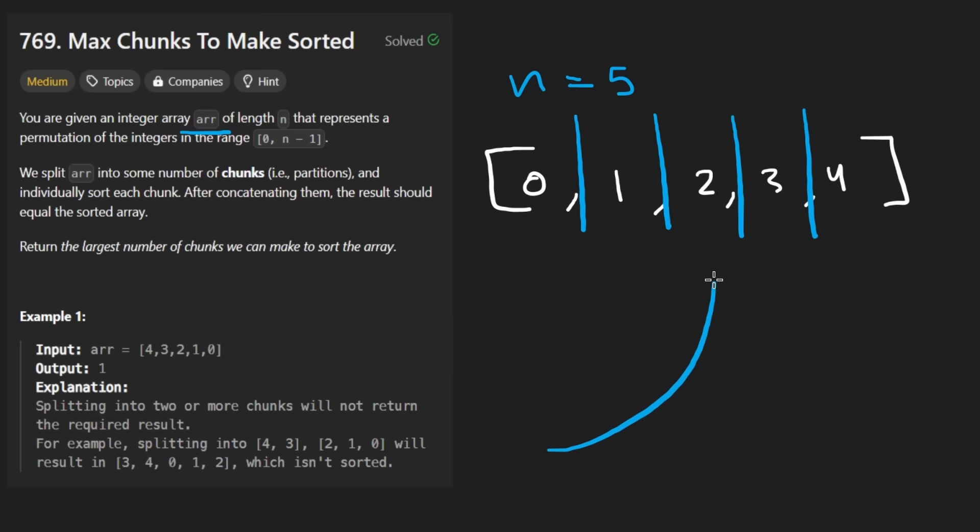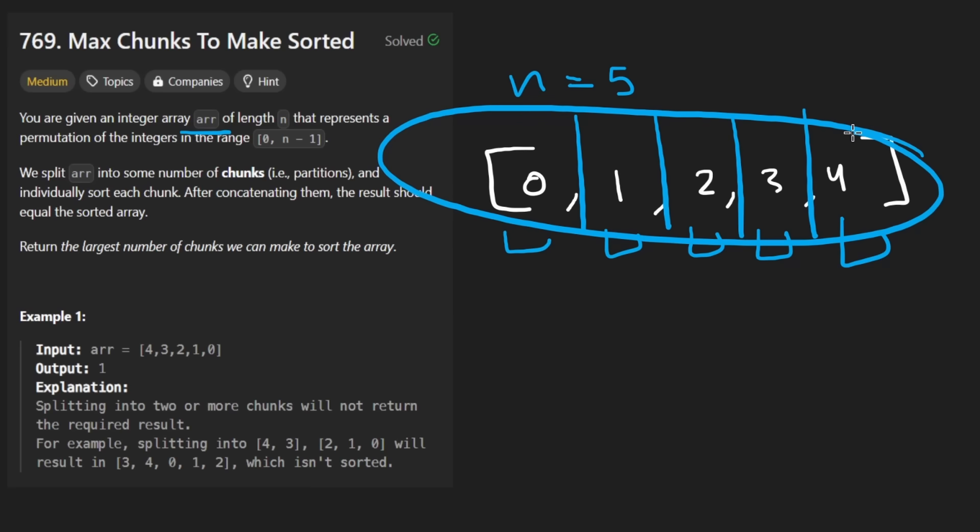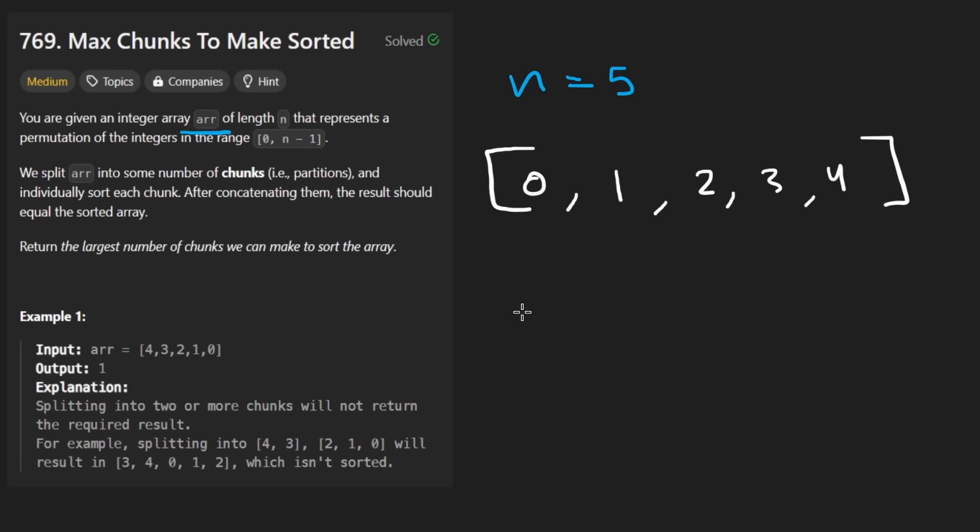And it looks like this particular example actually satisfies that. If we were to just sort each of these individually, which is not doing anything, it basically means the original array is sorted. But consider the example over here, where it's reversed. Think about this. All we need to solve this problem is really just a couple key observations. So let me try to walk you through those.